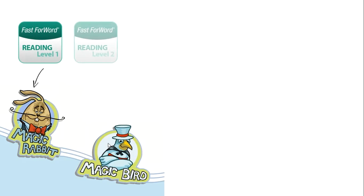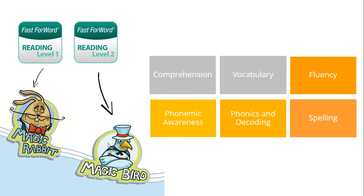Our next game is a spelling game, Magic Rabbit from the Reading 1 program and its follow-on game, Magic Bird from the Reading 2 program. These games focus on phonemic awareness, phonics and decoding, spelling and fluency for letter and word recognition.